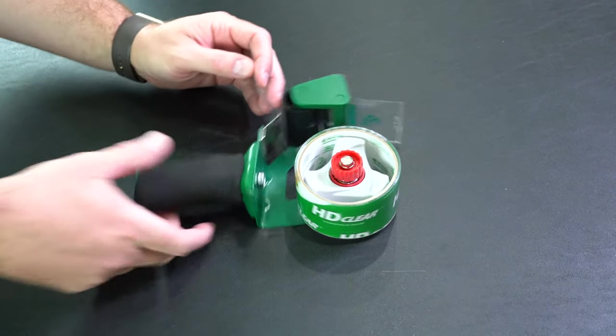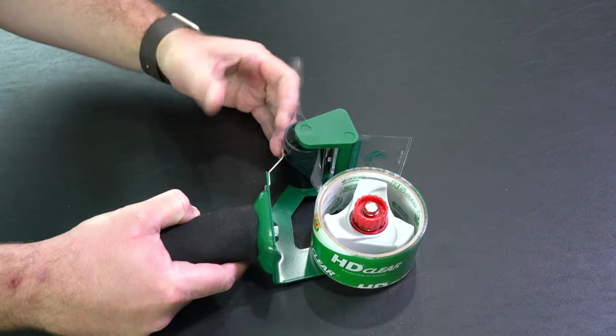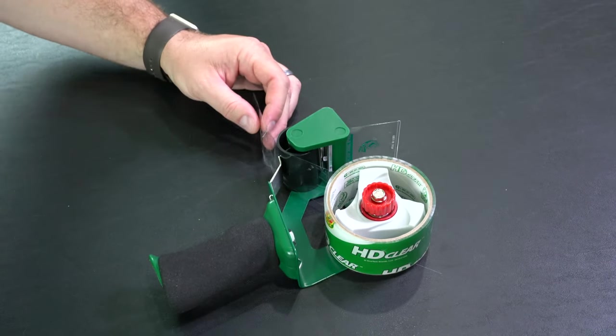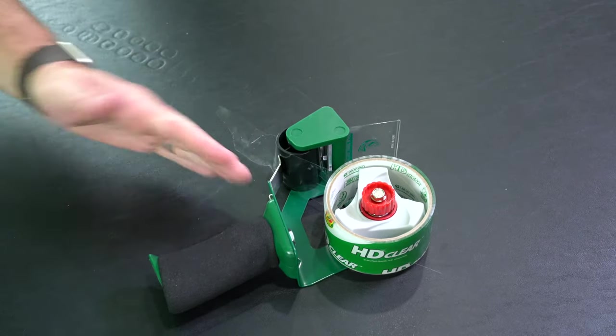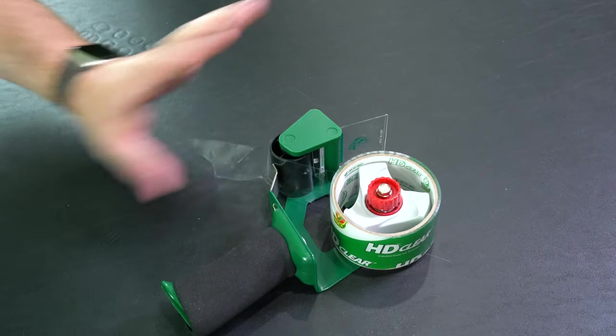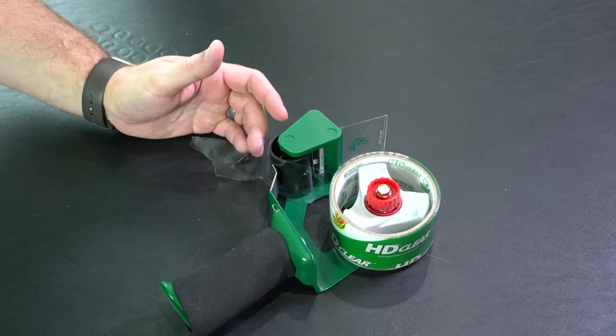Once you've done that, pull the tape between the wheel and that little metal piece. Again, this side, the side that's closest to the handle, this is the sticky side. The non-sticky side is up there.